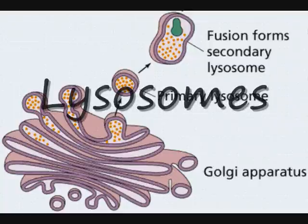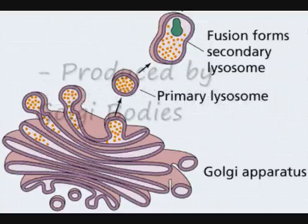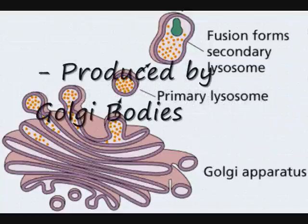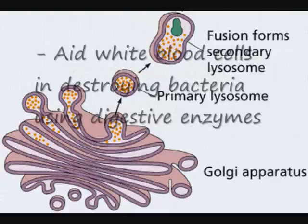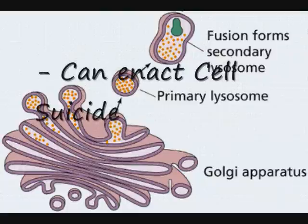Lysosomes, which are produced by Golgi bodies, contain digestive enzymes to destroy unwanted particles and aid white blood cells in destroying bacteria. They can also enact cell suicide, which is more properly called apoptosis.